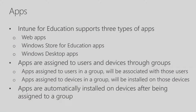Intune for Education supports three types of apps: web applications, Windows Store for Education apps, and Windows desktop apps. These apps are assigned to users and devices through groups, like settings. Apps assigned to users in a group will be associated with those users, and apps assigned to devices in the group will be installed on those devices.